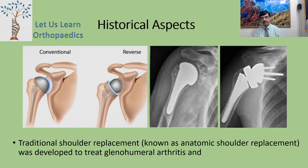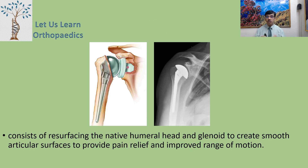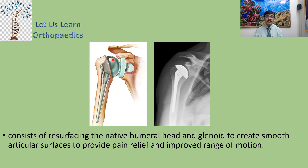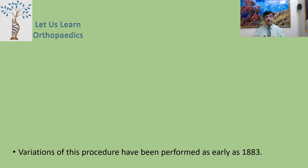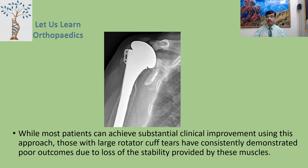Regarding the historical aspect: the traditional shoulder replacement, known as the anatomic shoulder replacement, was developed to treat glenohumeral arthritis. It consists of resurfacing the native humeral head and the glenoid to create a smooth articular surface, providing pain relief and improved range of motion. Variations of this procedure have been performed as early as 1883.